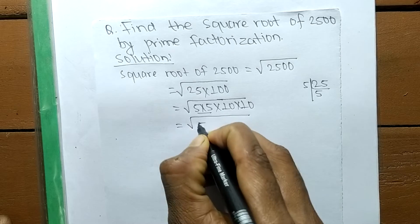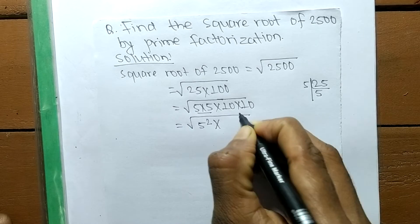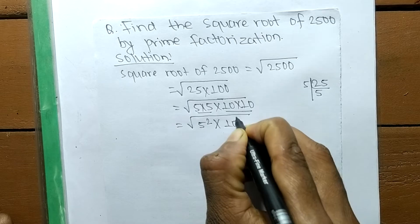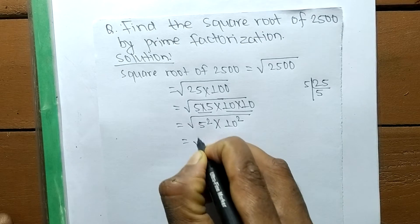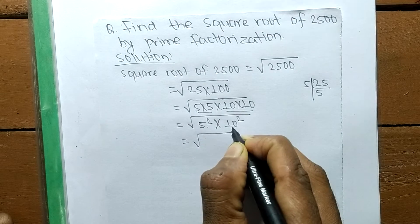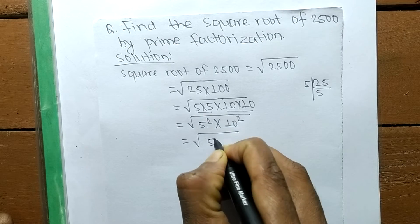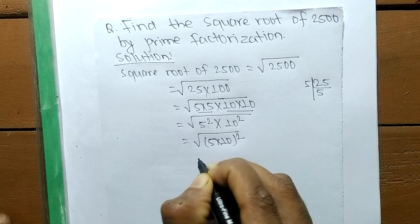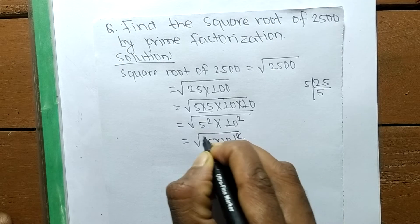Both 5 and 10 contain a square, so we can write (5 × 10) whole squared. Now a square and a square root cancel each other, so 5 × 10 comes out of the square root.